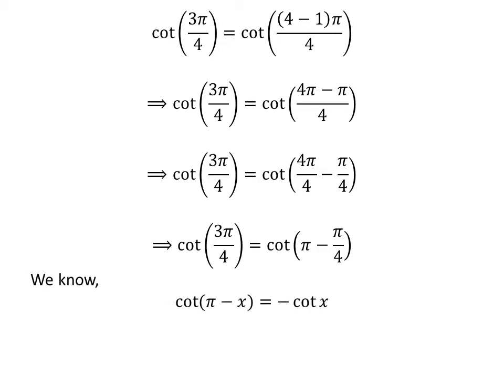We know the famous trigonometry identity: cotangent of pi minus x is equal to minus cotangent of x. The proof of this identity has been explained in the video appearing in the upper right corner, and the link is also given in the description. Applying this identity gives us cotangent of 3 times pi upon 4 is equal to minus cotangent of pi upon 4.